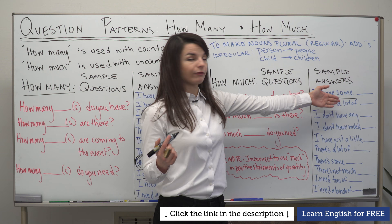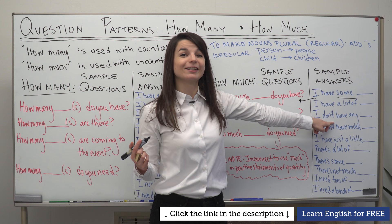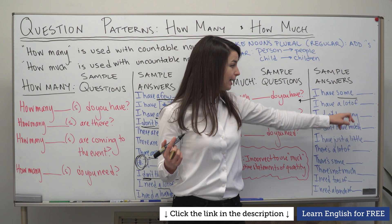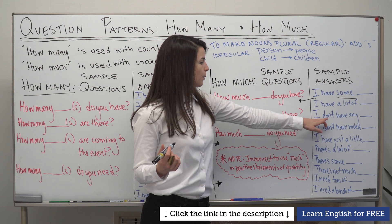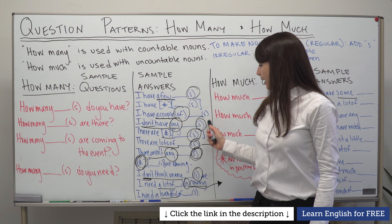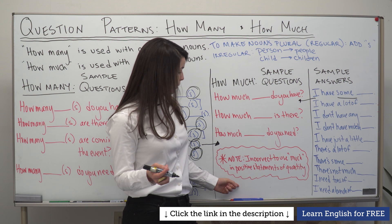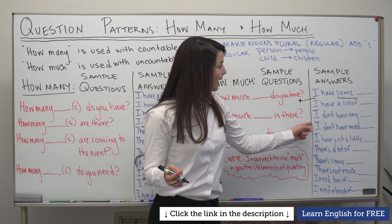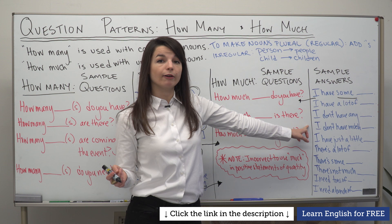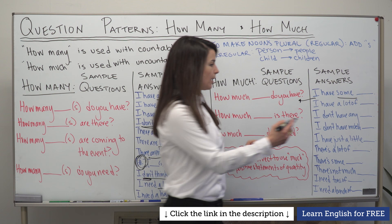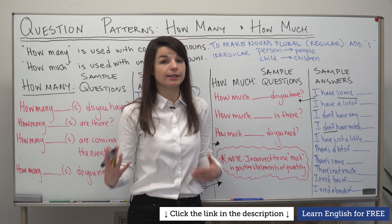However, 'much' can be used in a negative statement of quantity. 'I don't have much time' and 'I don't have much money' are both correct — the negative 'do not' makes it acceptable. For zero of an uncountable noun, say 'I don't have any money' or 'I don't have any time' — with no S at the end, since these are uncountable nouns.